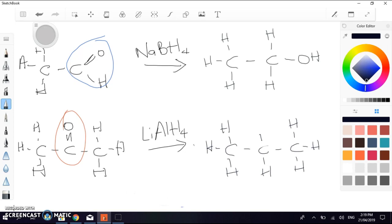So I'm just going to redraw it to make it really obvious. So we've turned our aldehyde into a primary alcohol, and our ketone into a secondary alcohol, and that is a reduction reaction.